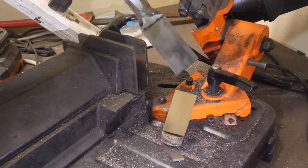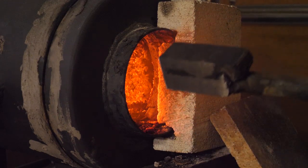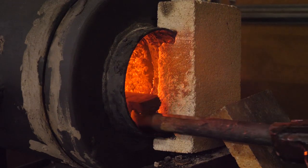We've cut our billet in two and it looks nice and solid. So we're going to restack these pieces on top of each other and re-weld them together, increasing our layer count.